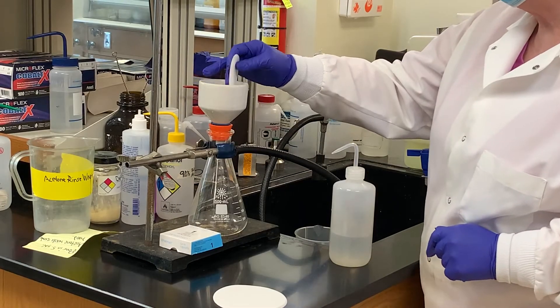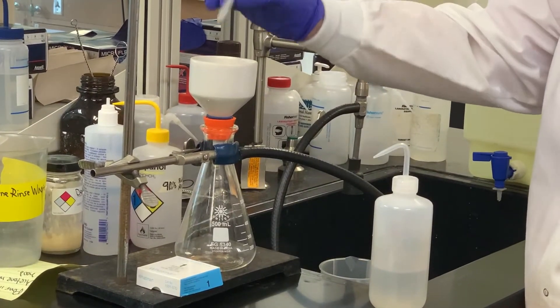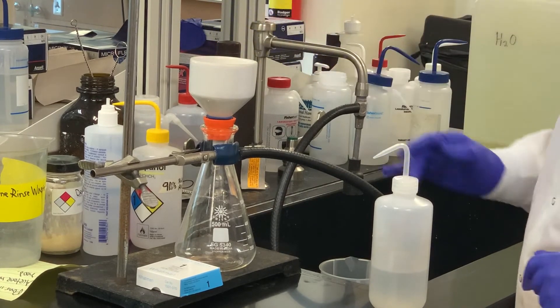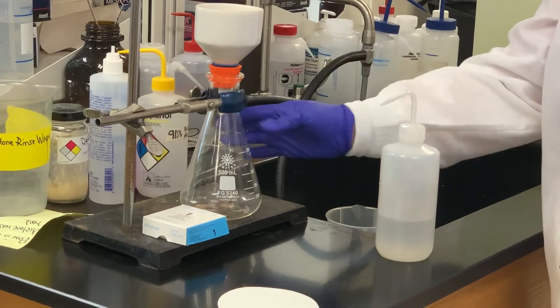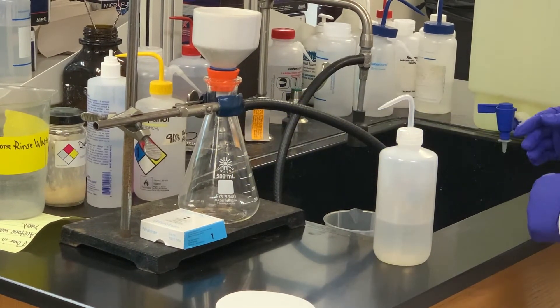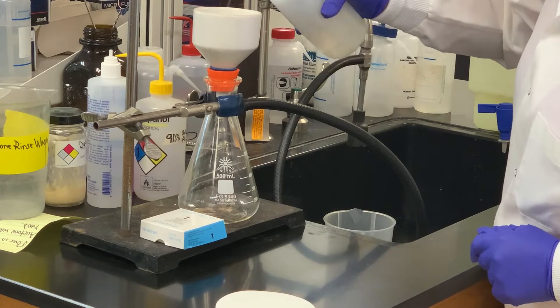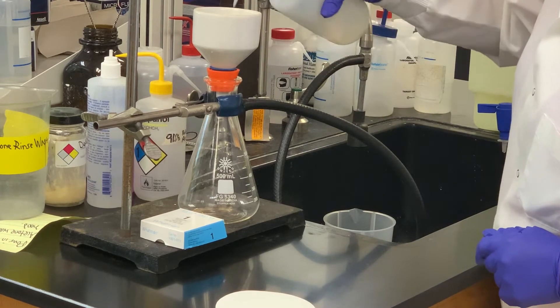I'm getting ready to use the Buchner Funnel vacuum filtration, so again, always use the right size filter paper. I've got the vacuum hose hooked up to the sidearm adapter of that suction flask. We're going to add just enough water to wet the top of the filter paper there.